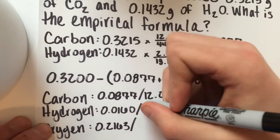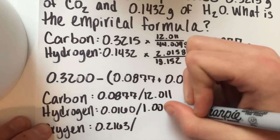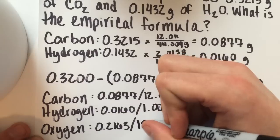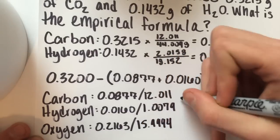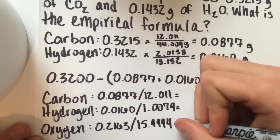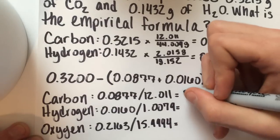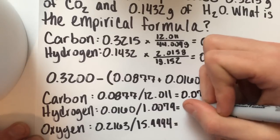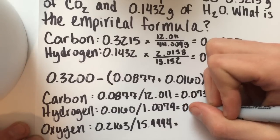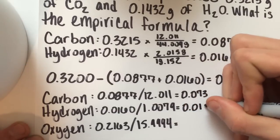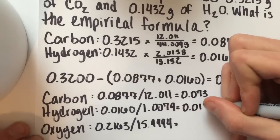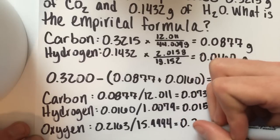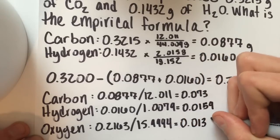Now you divide all those by their atomic weights. So carbon is 12.011, hydrogen is 1.0079 and oxygen is 15.9994. So we get for values 0.073, 0.0159 and 0.0135.